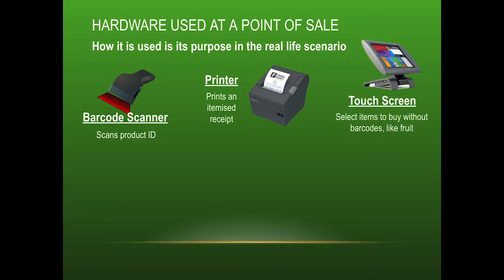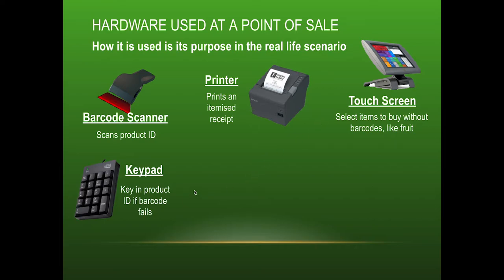A touchscreen is both an input and output device, used for products that don't have a barcode — like fresh fruit you weigh yourself — or if the barcode isn't working and you need to manually enter details. In exams, it's important you say keypad and not keyboard. The keyboard is your full QWERTY with all keys, but here you only need the numeric part — the keypad — which is used to key in product details that didn't scan properly or items without a barcode.